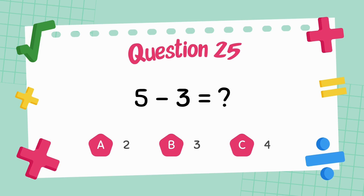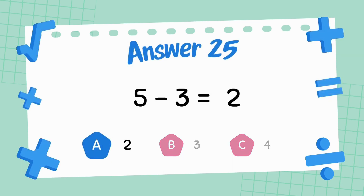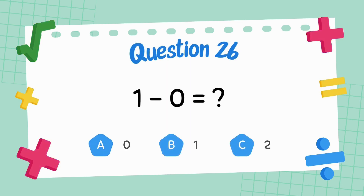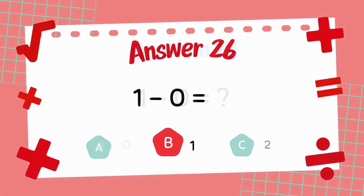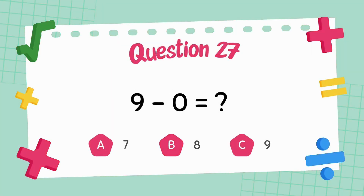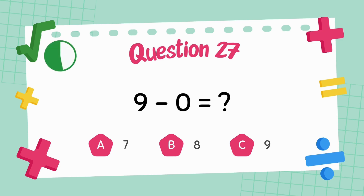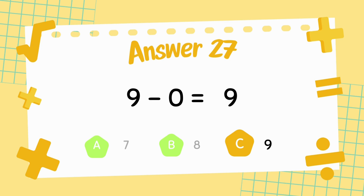What is 5 minus 3? The answer is 2. What is 1 minus 0? The answer is 9. What is 9 minus 0? The answer is 9.